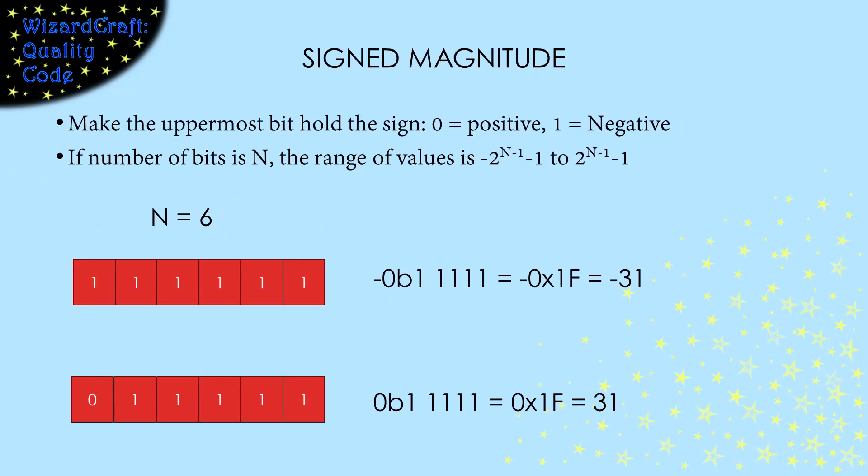When our numbers are signed, we have to be able to store both positive and negative numbers. The first way we'll look at for doing that is called signed magnitude. In this, the leftmost bit holds the sign. Zero means positive, one means negative. The rest of the bits hold the absolute value of the number. That's the magnitude of the number.